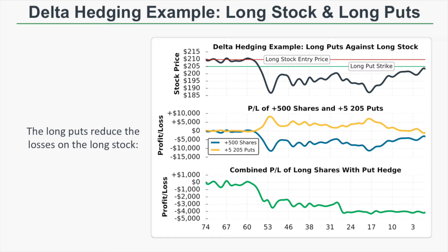As we can see, the stock price falls from $210 down to around $185. When that move happens, the long 500 shares lose a lot of money — at the lowest point, the long stock position is down around $10,000. But since the long puts have negative deltas, they gain value as the stock price decreases, which offsets the losses on the long shares. In the bottom of the graph, when the stock price falls from $210 to around $185, the loss on the combined position is less than $4,000, compared to greater than $10,000 on the long stock position alone. So by implementing a long put hedge, the investor significantly reduced their loss potential when the stock price decreased.